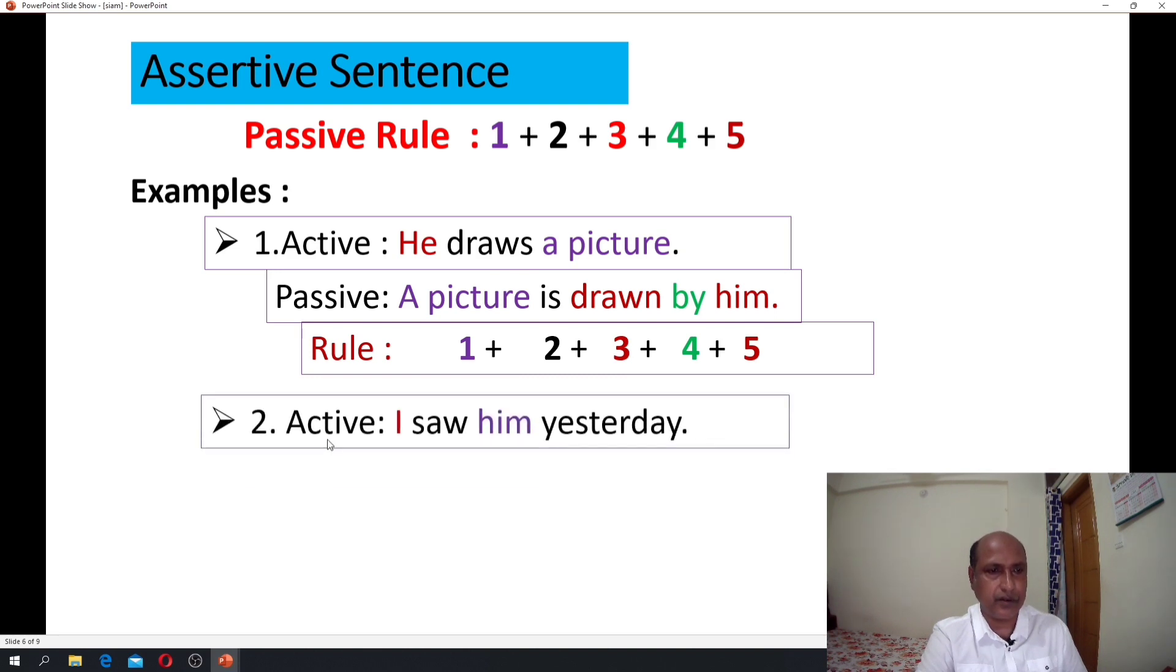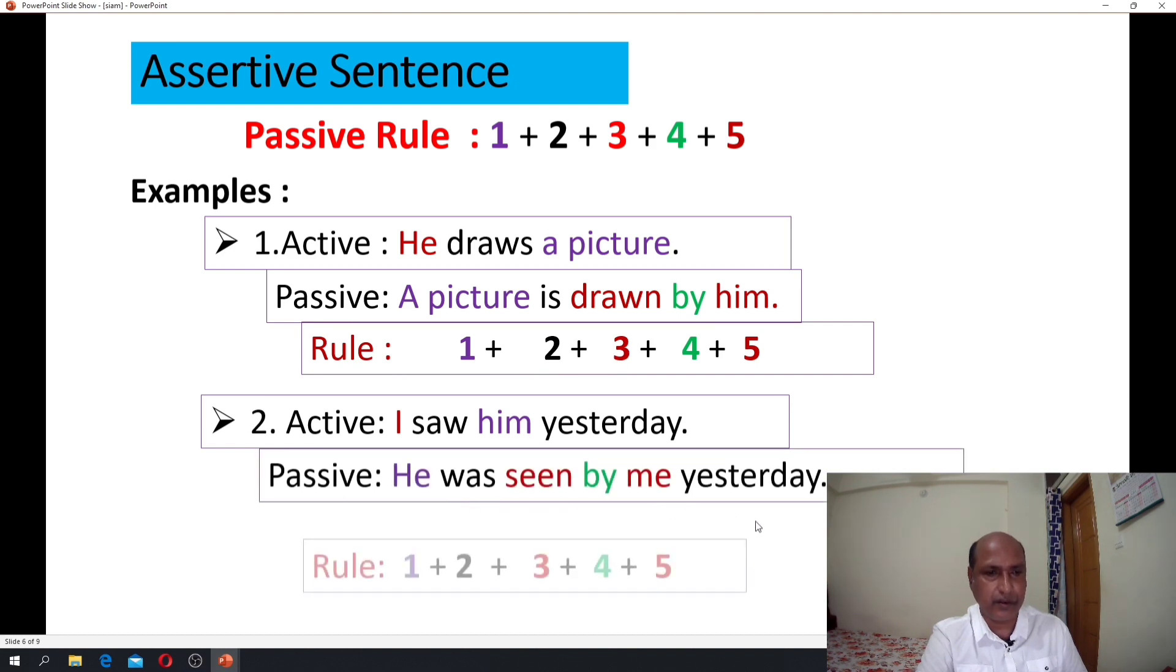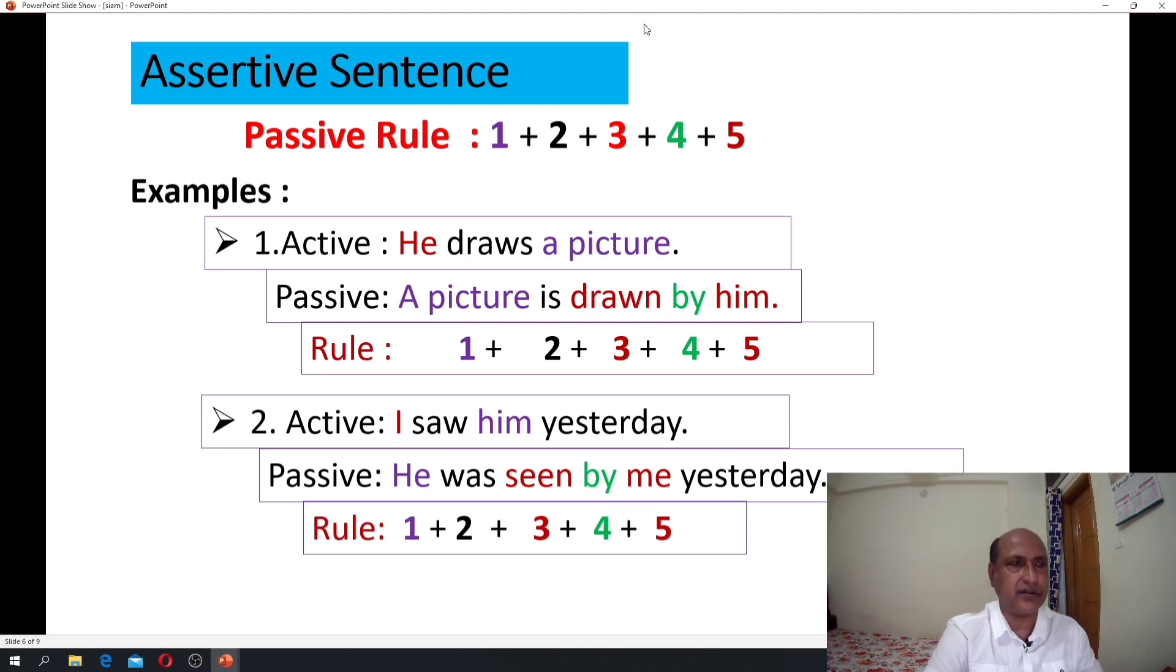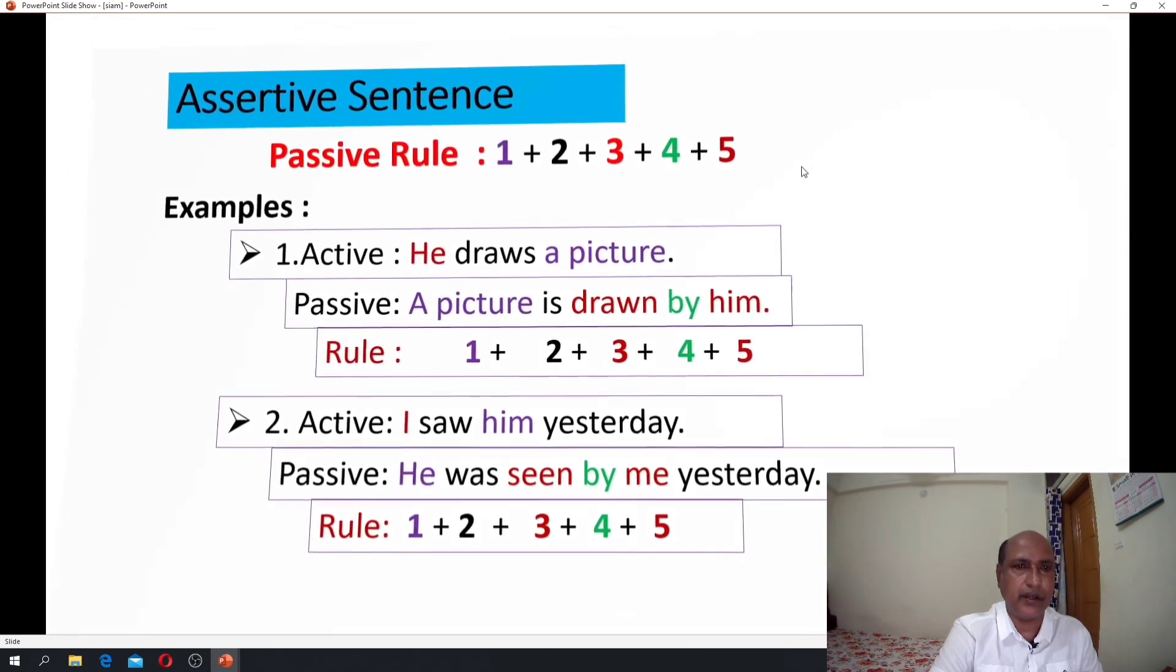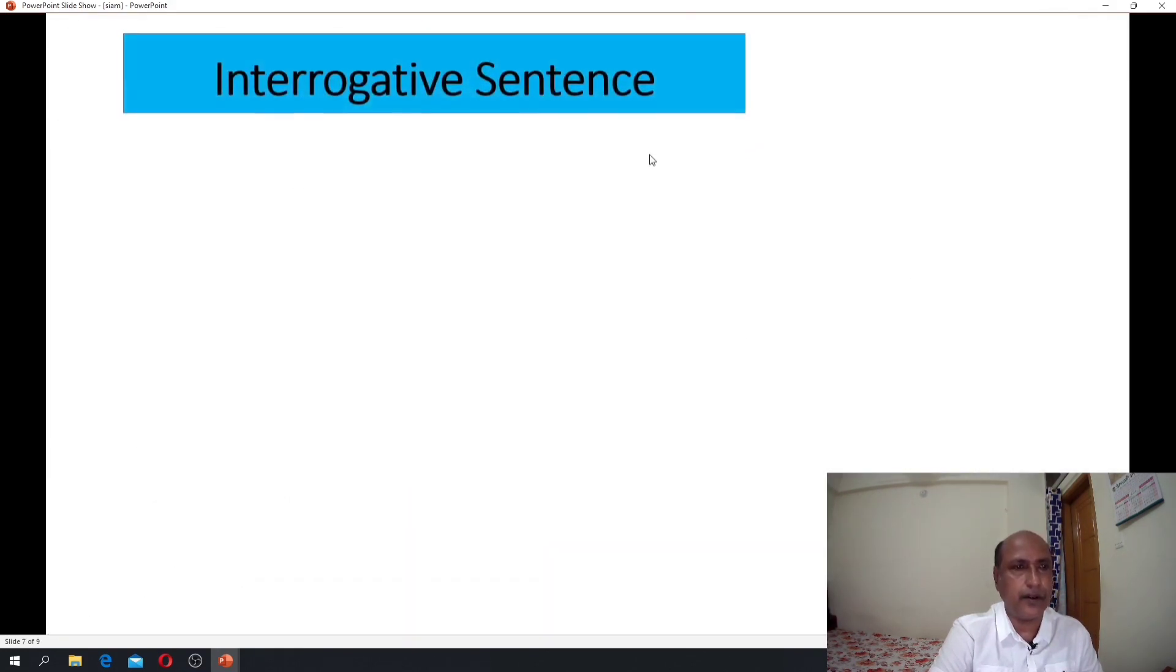Next, another example. Active: I saw him yesterday. Passive: he was seen by me yesterday. Rule: one, two, three, four, five. Sentence to past tense. He, number one object-subject. He take him take he. Number two, be verb. Past tense be verb was. Three, see verb past participle seen. Four, peer position. Five, I take me, object. That's okay for assertive sentence. You will follow the rule only.